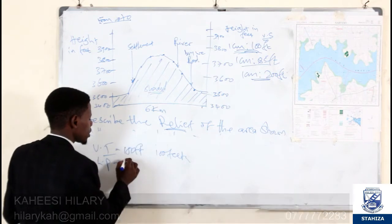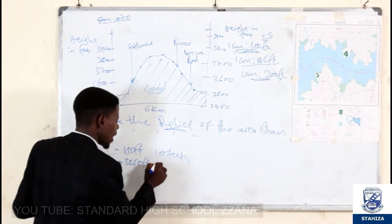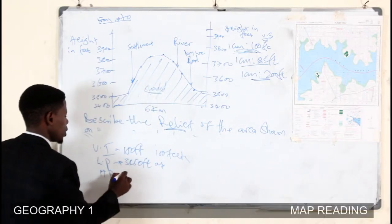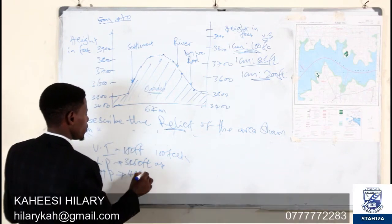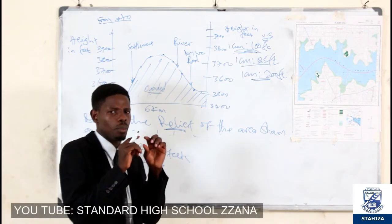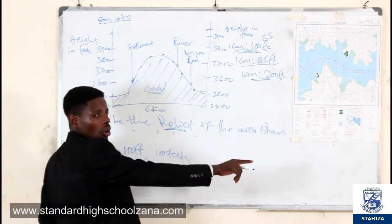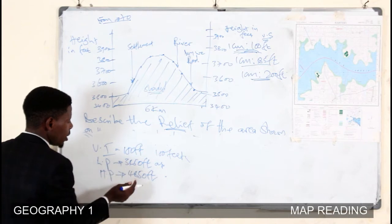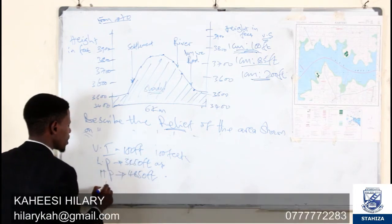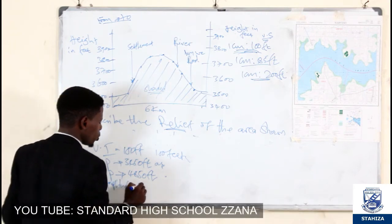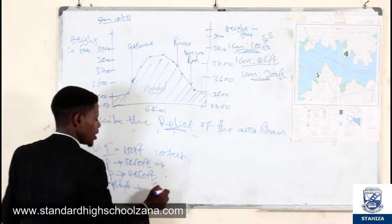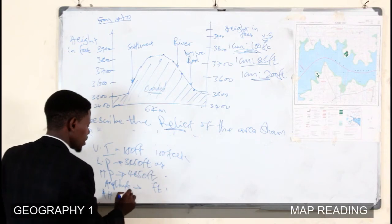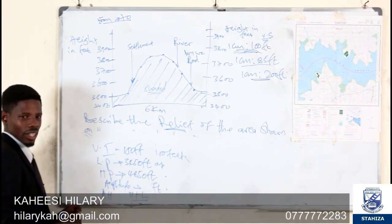Say the lowest point is, for example, 3,450 feet — and direct that person to where it is found on the map. The highest point, for example 4,850 feet, is especially where we have the primary trigonometrical station — direct someone to the eastern part to find it. If you have the highest and lowest contour, tell us the amplitude by subtracting the lowest from the highest. Then tell us the average height by adding the highest and lowest and dividing by 2.